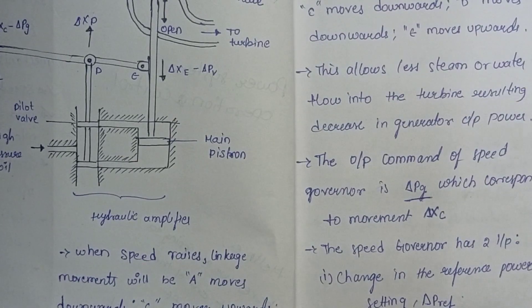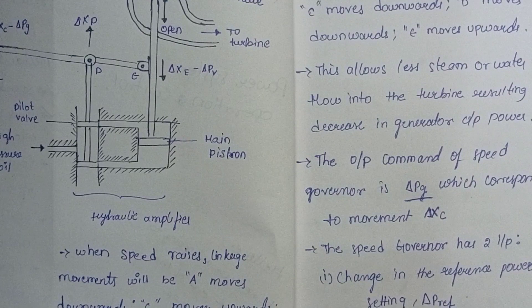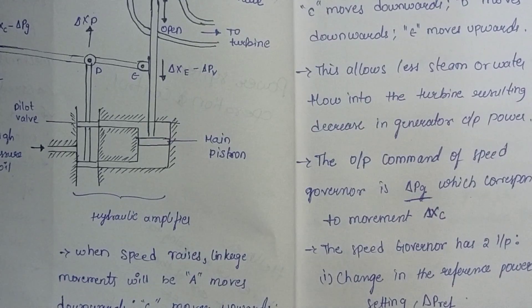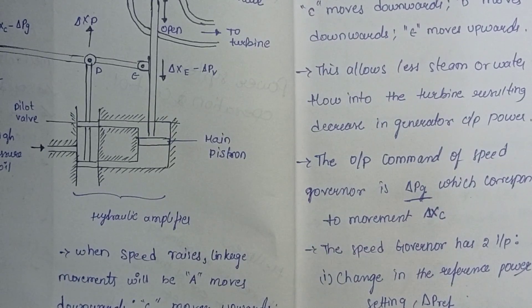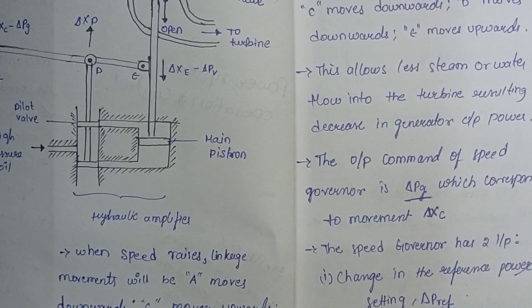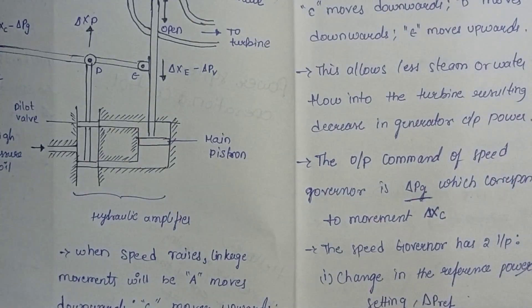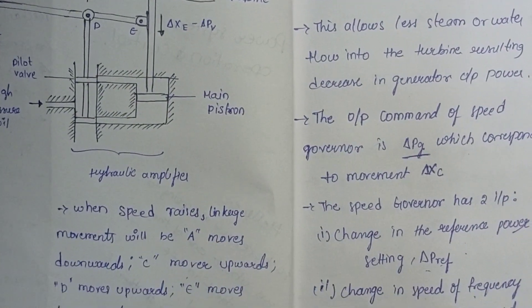The first input to the speed governor is the reference power setting — that is delta P reference. The second input is the change in speed or frequency of the generator — that is delta F, as measured by the movement of delta XB. So these are the two inputs of the speed governor: reference power setting and change in frequency.